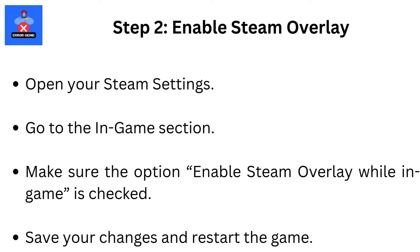Step 2: Enable Steam Overlay. The Steam Overlay must be enabled for in-game purchases. Open your Steam settings and go to the In-Game section. Make sure the option 'Enable Steam Overlay while in-game' is checked. Save your changes and restart the game.